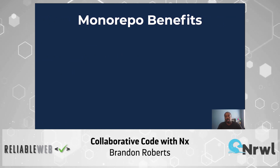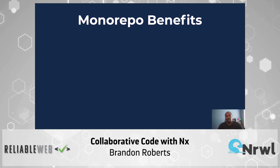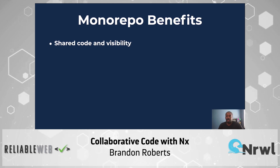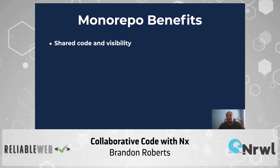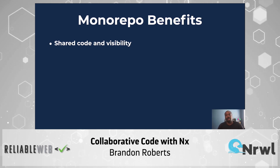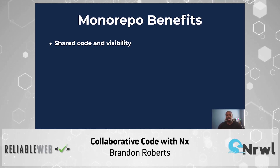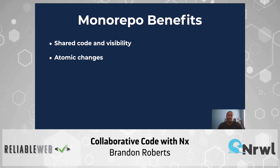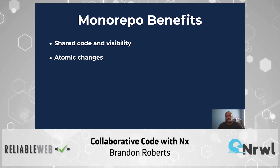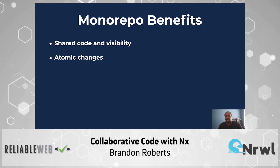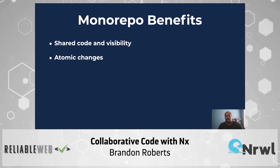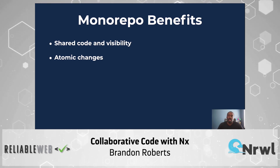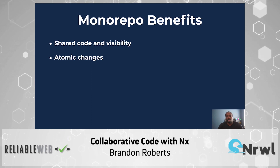Some of the benefits of monorepos are shared code and visibility. You can reuse validation code, UI components, and types across the code base. There's also atomic changes — when making changes, you can make changes across boundaries of these applications without coordinating across multiple repos.